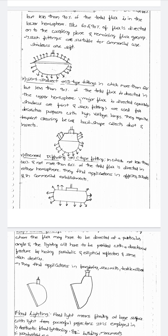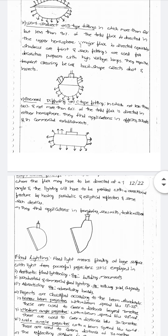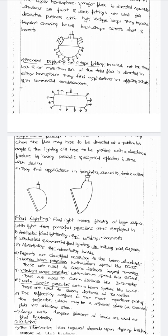The next one is semi-indirect, or D-type fitting. In this type, more than 60 percent but not less than 90 percent of the total flux is directed in the upper hemisphere. The major flux is directed above the source point. Such fittings are used for decorative purposes with high voltage lamps, and they require frequent cleaning due to the effects of dust.